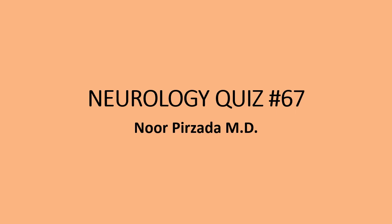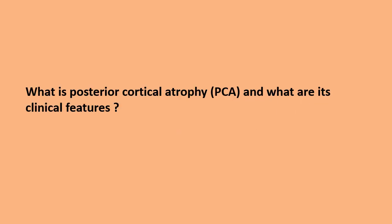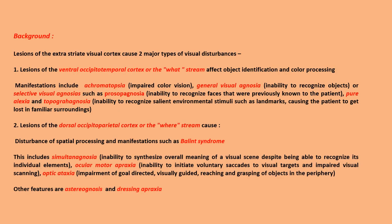Neurology quiz number 67: What is posterior cortical atrophy, or PCA, and what are its clinical features? We begin with background on lesions of the extra-striate visual cortex, which cause two major types of visual disturbances.